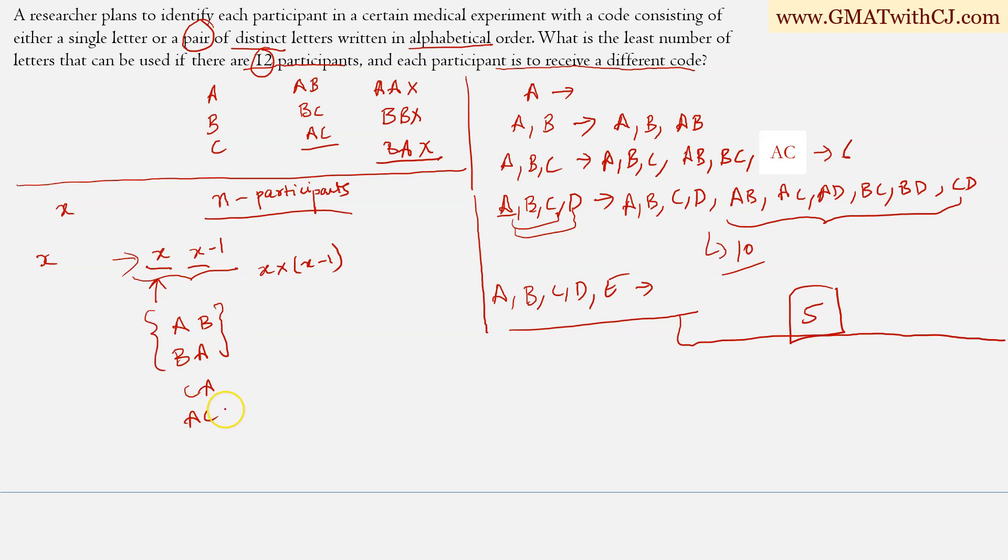But we know that for every such two pairs, only one code is valid, right? So out of every two codes, only one code is valid. So to get the number of valid codes we have, we need to divide this number by two. So this is the number of valid codes, two digit codes or two letter codes that we can generate out of these X letters.